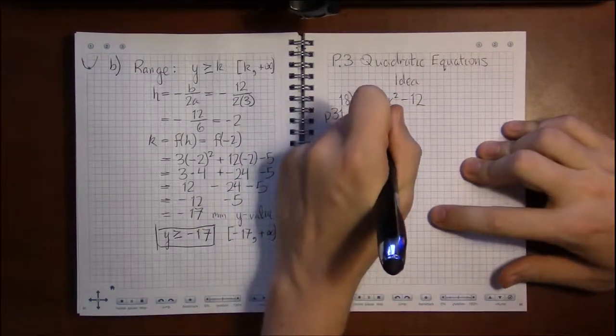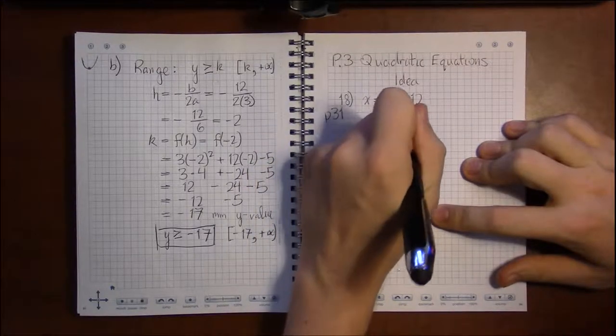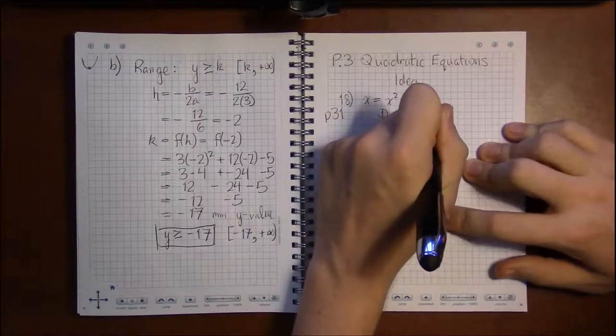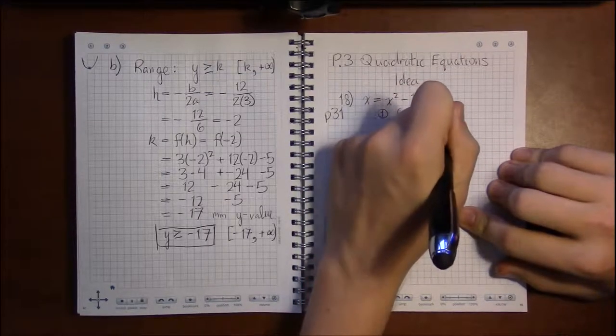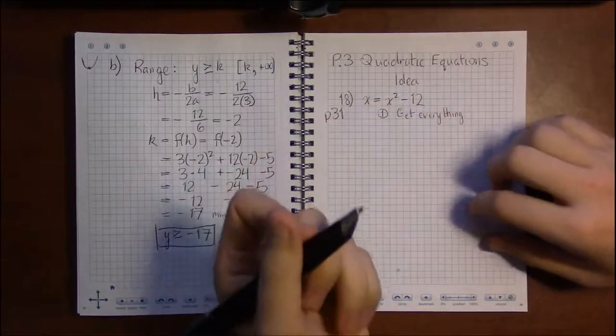The first thing you want to do when solving a quadratic equation is to get everything on one side, or in other words, get one side to be zero.